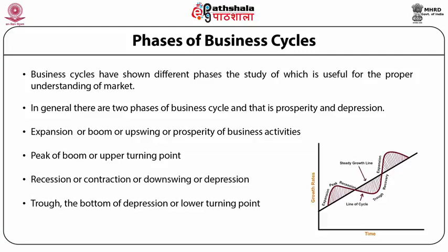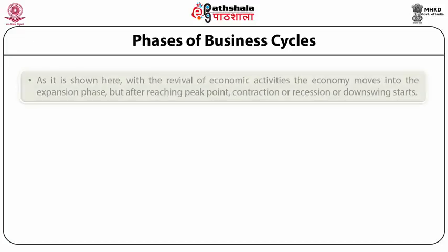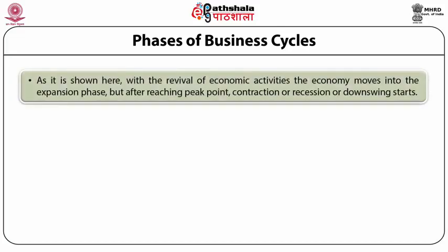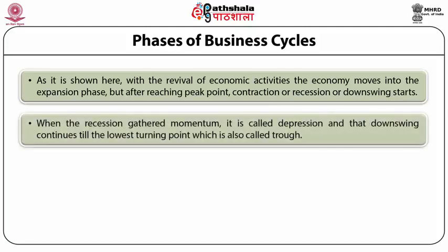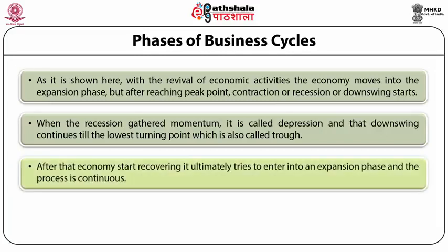These phases are shown in the following figure. With the revival of economic activities, the economy moves into the expansion phase. After reaching its peak point, contraction or recession or downswing starts. When recession gathers momentum, it is called depression, and that downswing continues till the lowest turning point, also called the trough. After that, the economy starts recovering and ultimately enters into an expansion phase, and the process is continuous.